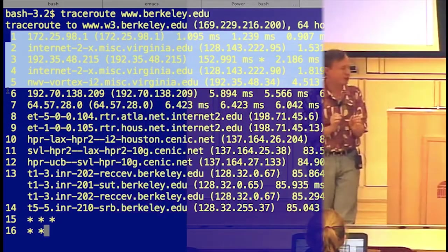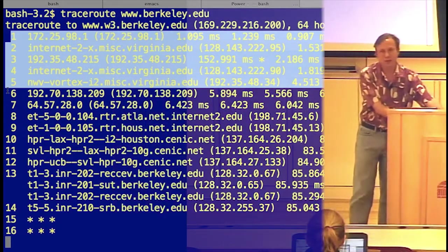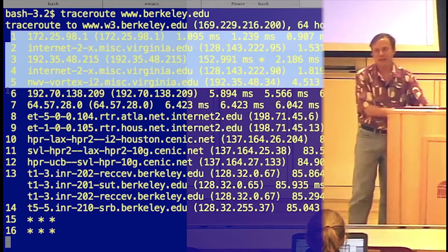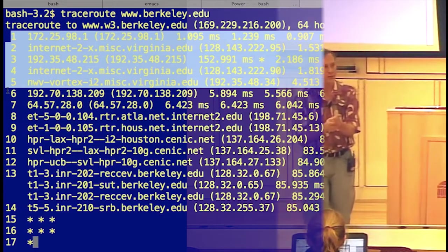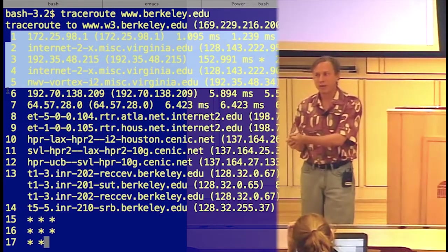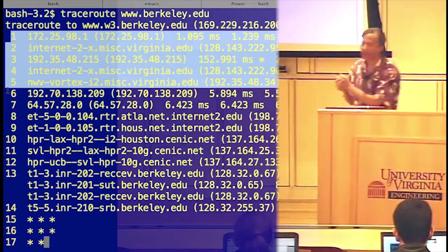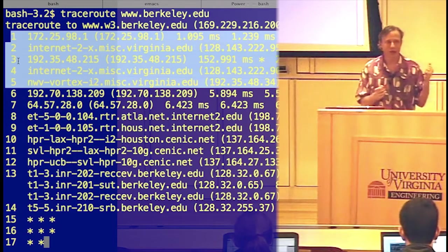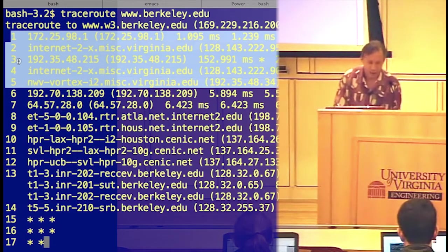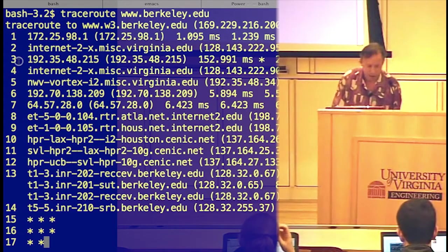They're all still virginia.edu addresses. Five seems not too unreasonable, right? It's got to go from my laptop here to some wireless access point. There's probably one in this room. To some router that that's connected to, probably in Rice Hall, to some router that's connected somewhere else on grounds that's eventually connected to the big pipe to the rest of the internet. So that's taking five hops to get there.